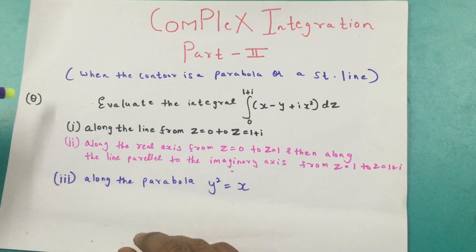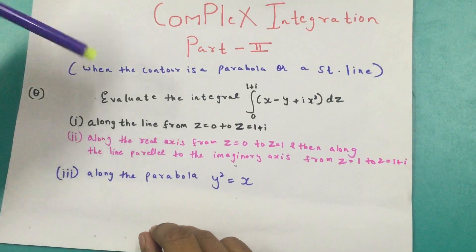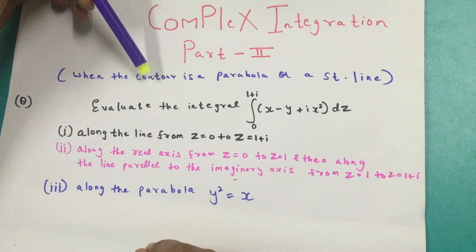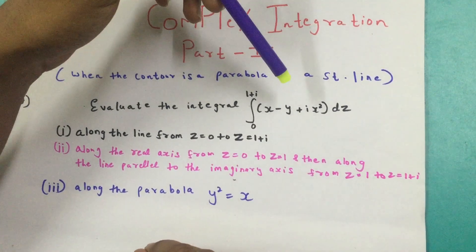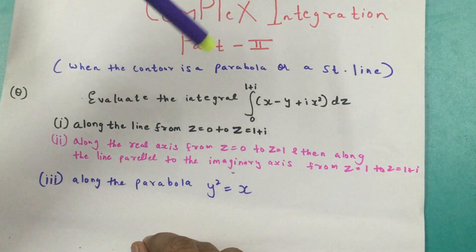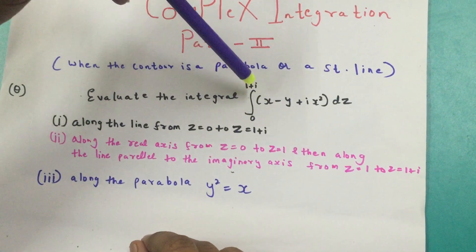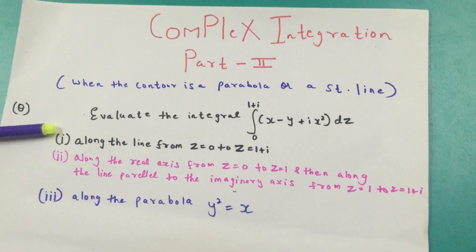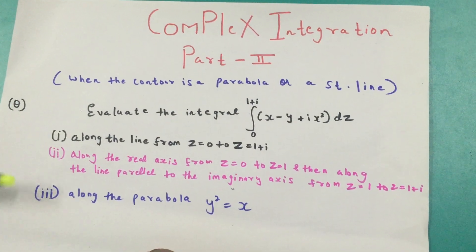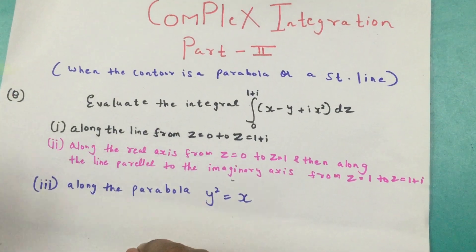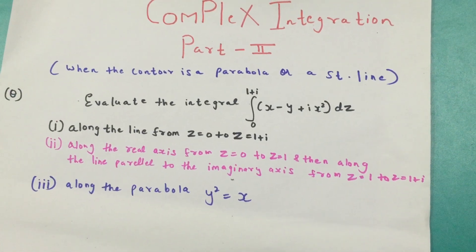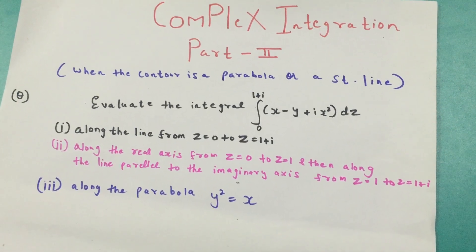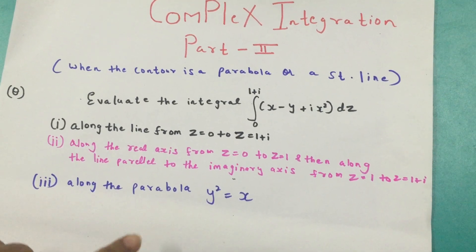The question here is: evaluate the integral of (x - y + ix²) dz from 0 to 1+i. We are given three lines along which we have to evaluate this integral, so let's examine which these lines are.